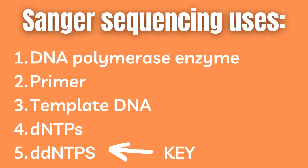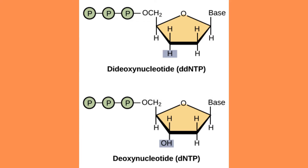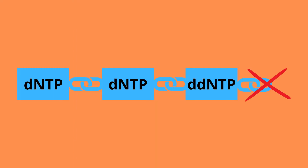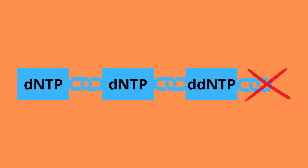In addition, a Sanger sequencing reaction contains dideoxy versions of the four nucleotides, shortened as ddNTPs, which causes the reaction to stop. This is because the dideoxy nucleotide lacks the hydroxyl OH group on its 3' carbon of the sugar ring, which normally acts as a link to the next nucleotide, forming a bridge between different nucleotides. Without this link, when a ddNTP is incorporated into the DNA strand, it results in a termination of the sequencing process — it breaks the chain of links.